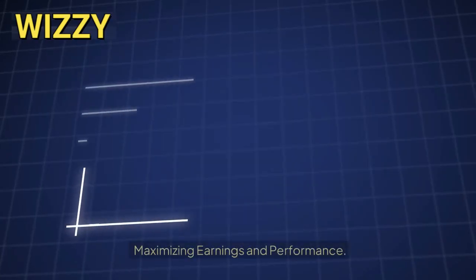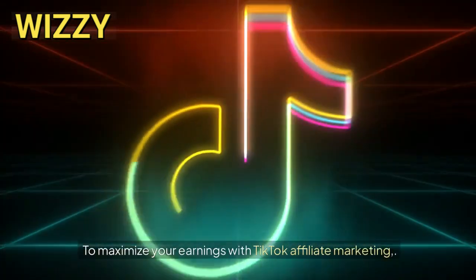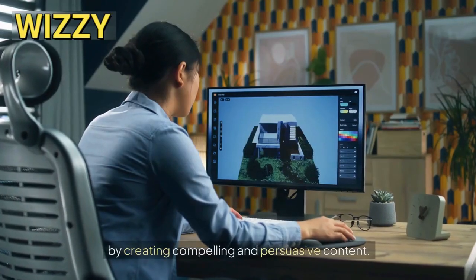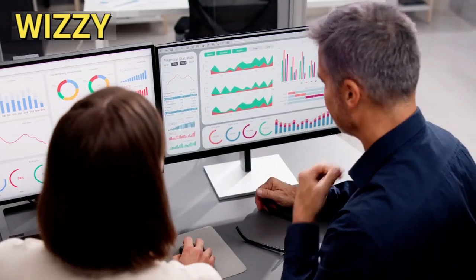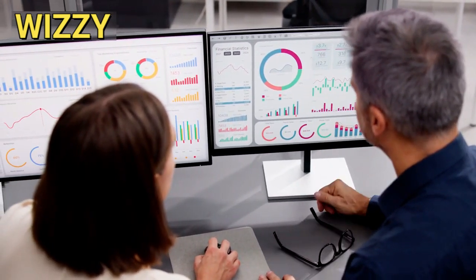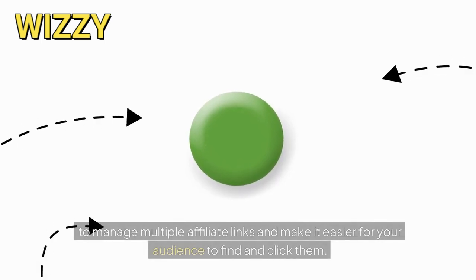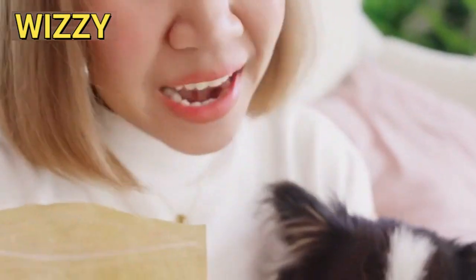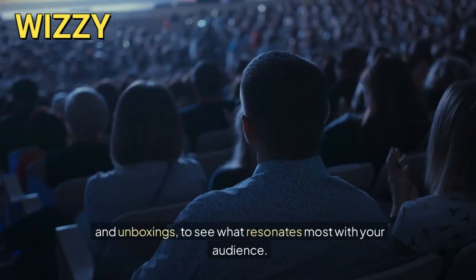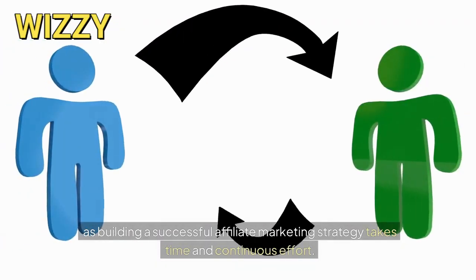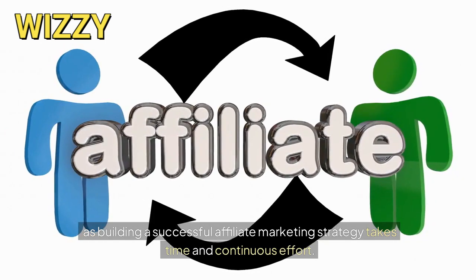Let's talk about maximizing earnings and performance. Focus on increasing your affiliate sales by creating compelling and persuasive content. Track and analyze your performance using tools like TikTok analytics to understand what works best and refine your strategy. Utilize apps like Linktree to manage multiple affiliate links and make it easier for your audience to find and click them. Experiment with product reviews, tutorials, and unboxings to see what resonates most. Stay consistent and patient, as building a successful affiliate marketing strategy takes time and continuous effort.